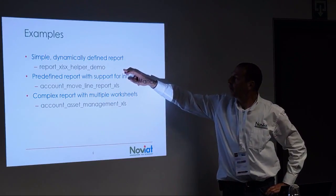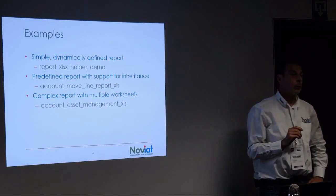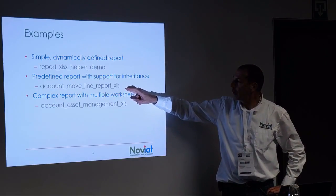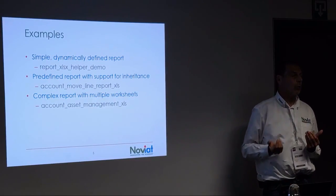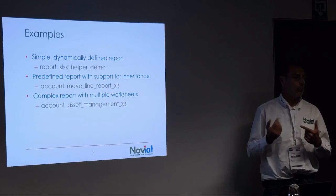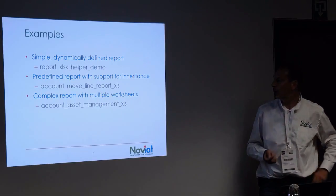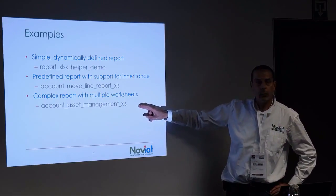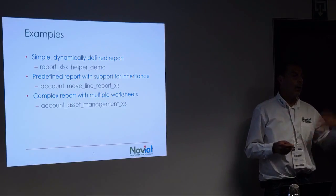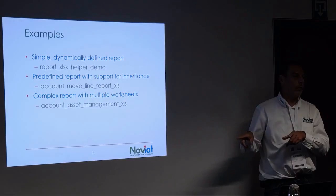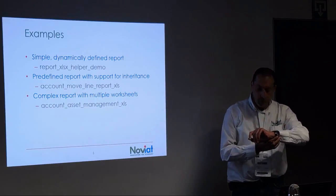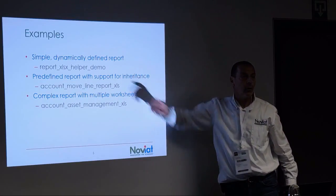On the OCA repo in V11 you will find a small module called 'report_xls_example' — that's a very simple example. Another one in the OCA is 'account_move_report_xls', which does an export on accounting entries where the module has a full template and then a limited set of columns for export. You can customize it to have more columns and change the order. And then a more complex one is the OCA module for Financial Asset Management, which has multiple worksheets — assets you acquire, active assets in depreciation, and assets removed from your system.